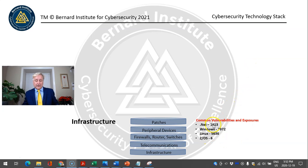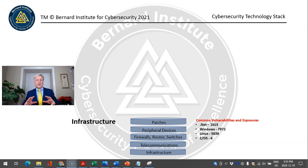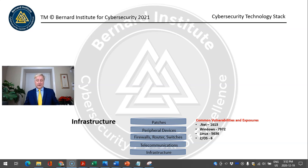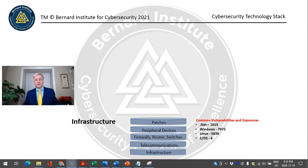Here's an example. In the Common Vulnerability and Exposure Database, there are 1,619 known vulnerabilities with .NET. .NET is the technology that Microsoft is using to code Windows and Windows products. The traditional Windows has 7,972 different vulnerabilities — quite a few. This is probably one of the reasons why Microsoft decided to migrate to a new technology, a new coding language, and a new architecture. Linux has 5,636.